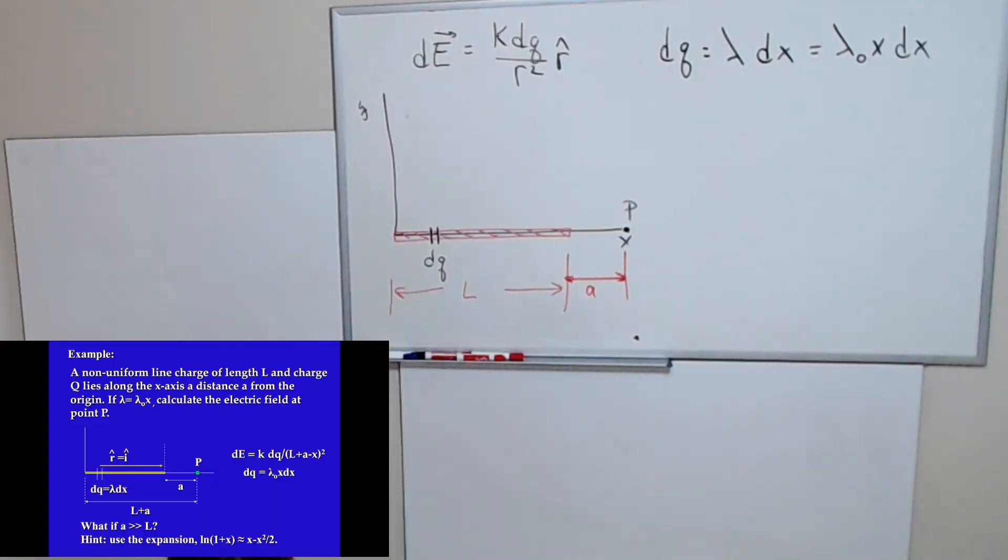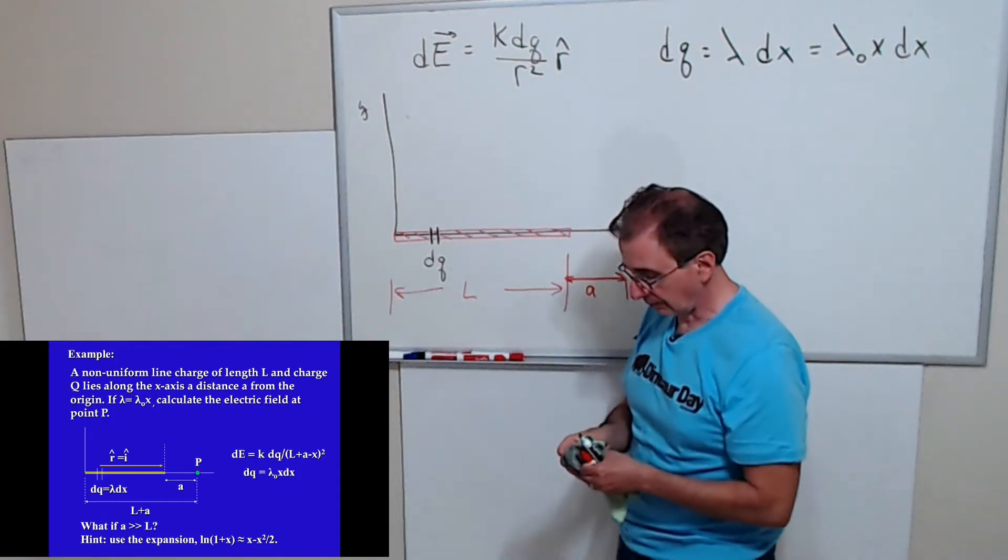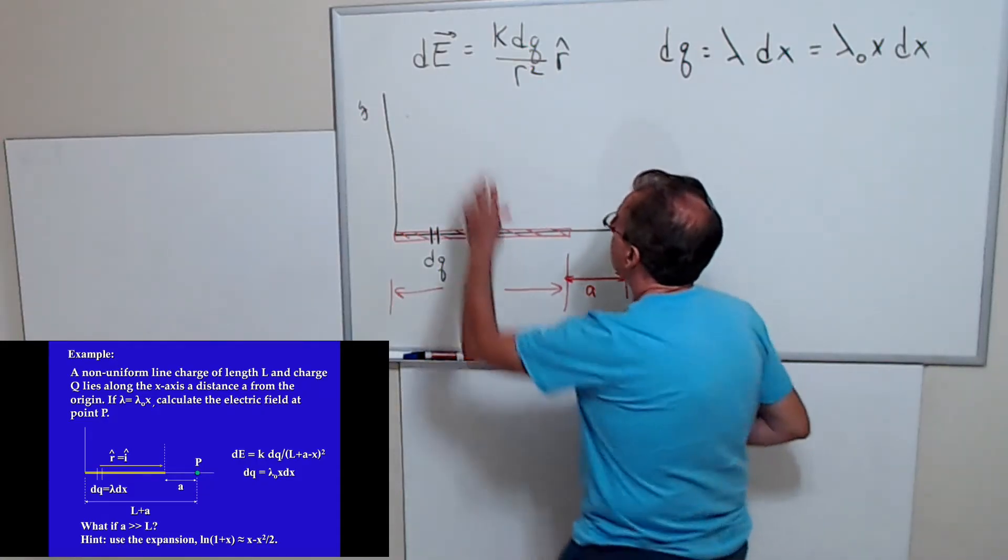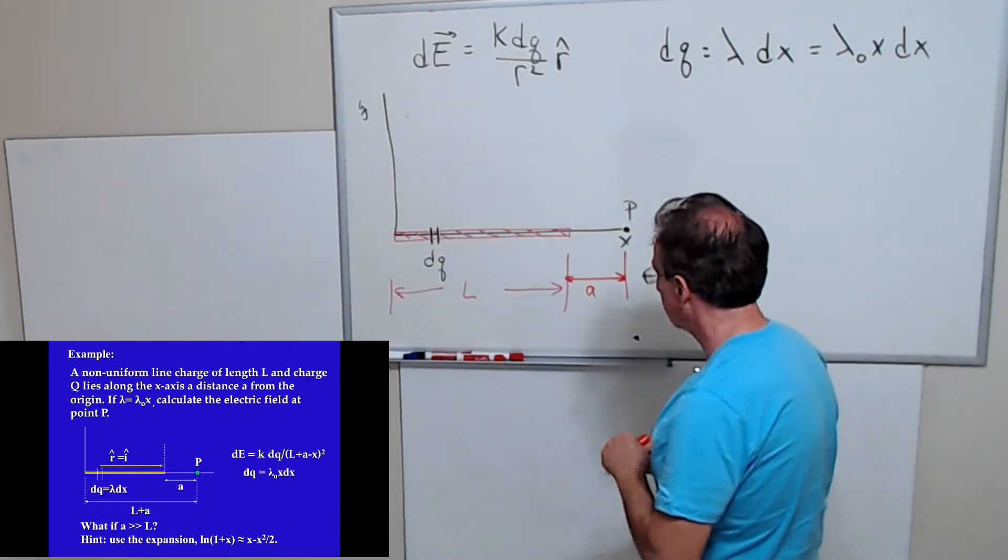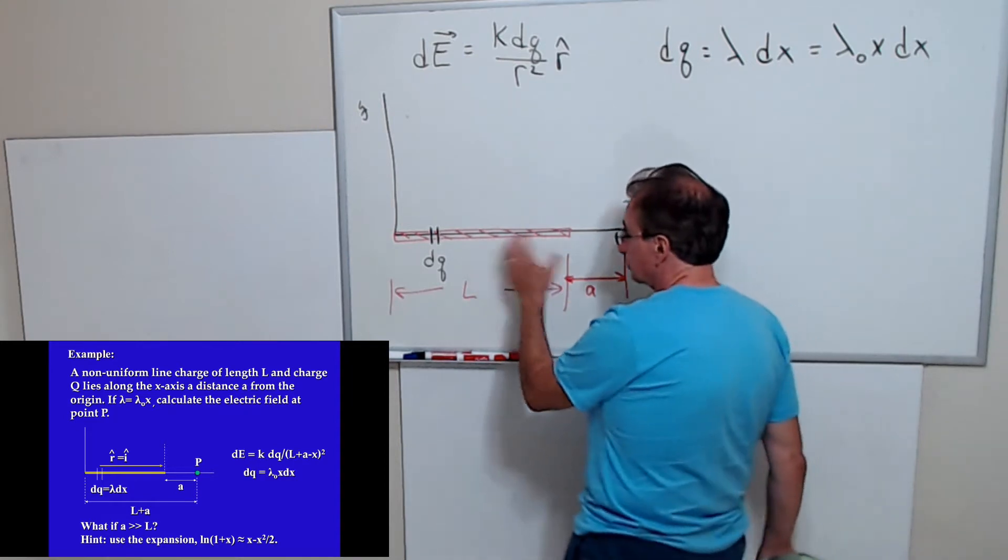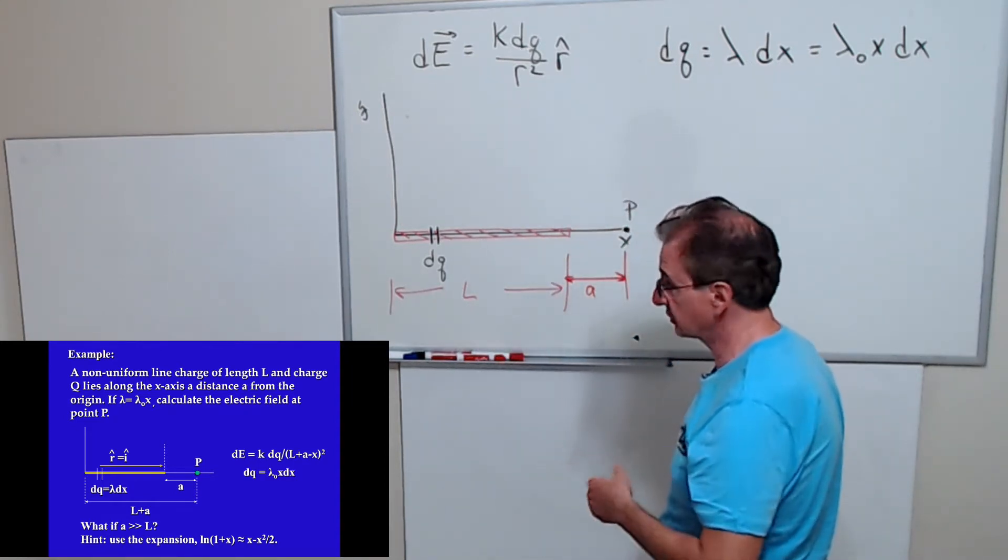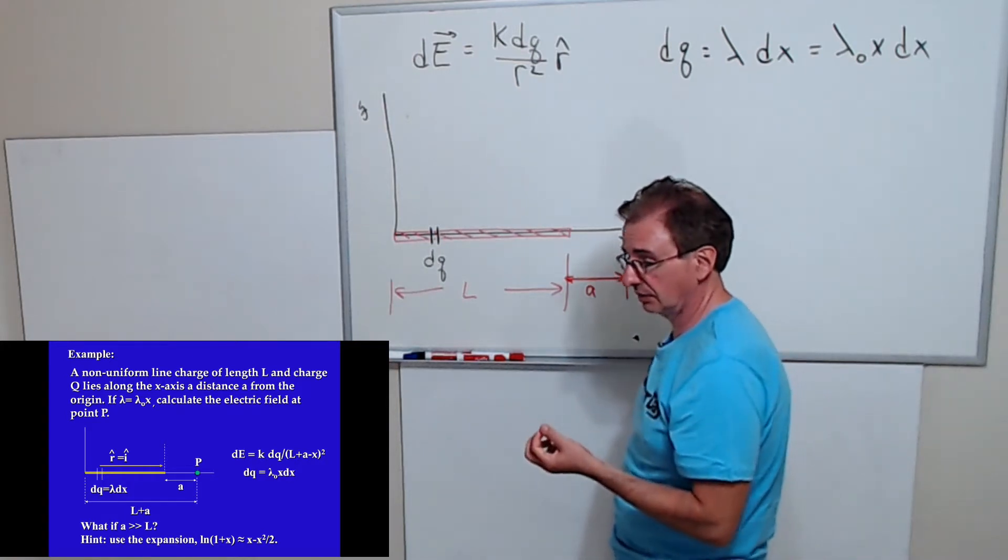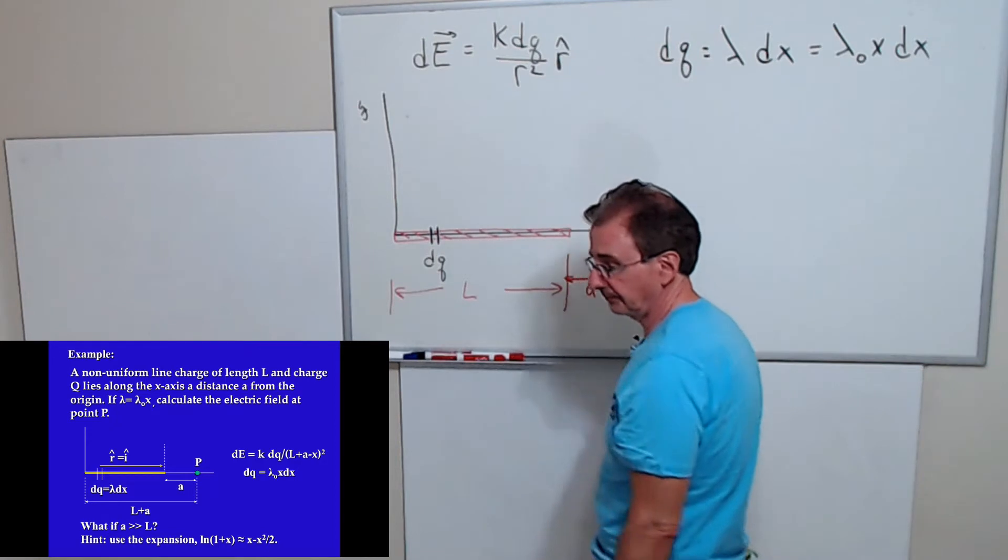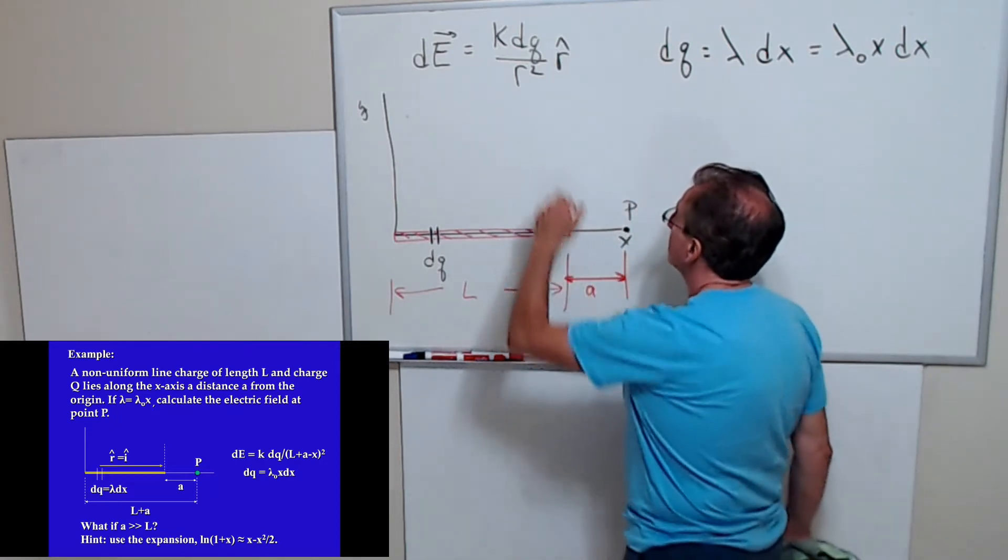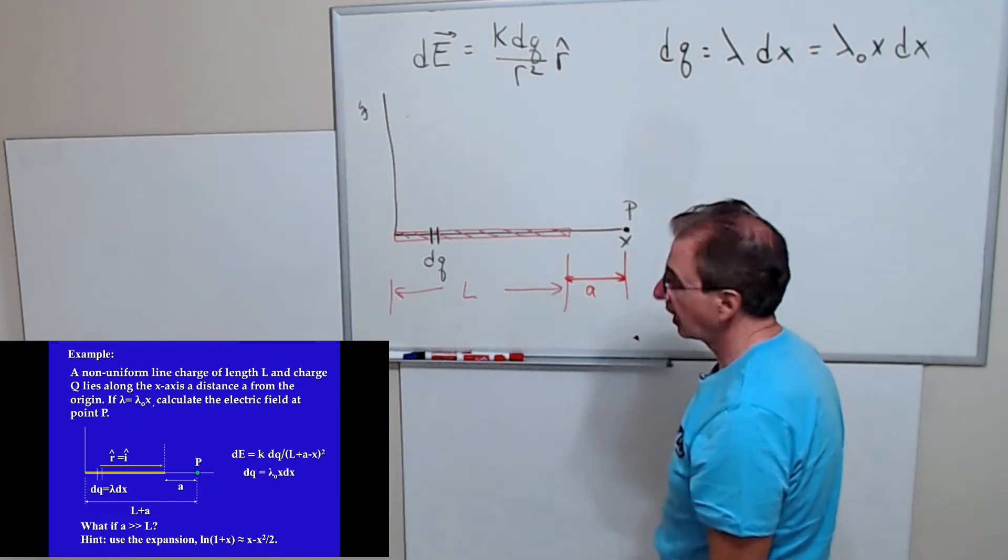I have drawn the figure up on the board here. To do this problem, I have to remember my expression for dE for an element of charge dQ. I have to take this rod and break it up into small pieces, small dQs, and derive an expression for dE based on this dQ. Of course I also need to know my expression for r hat and my expression for r squared.